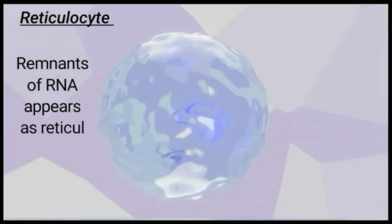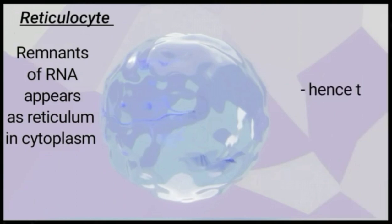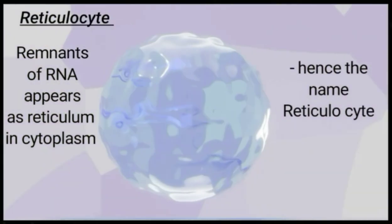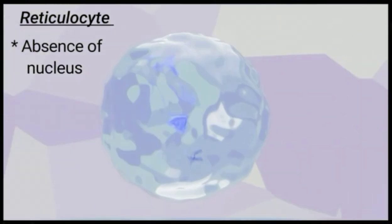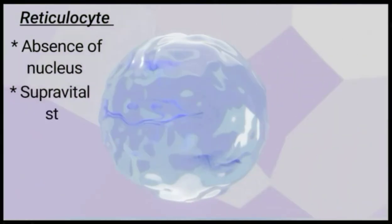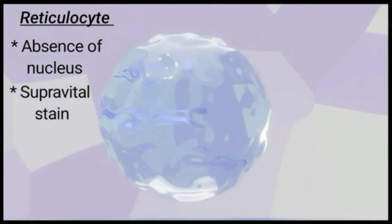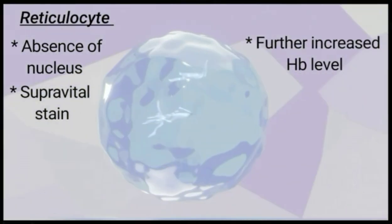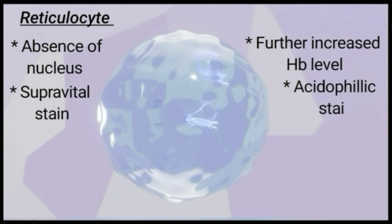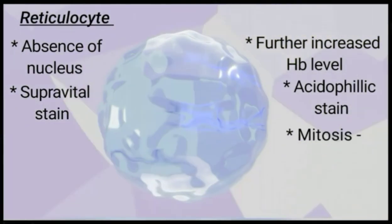Then late normoblast differentiates into reticulocyte. Remnants of RNA appear as a reticulum in the cytoplasm, hence the name reticulocyte. The nucleus is absent, it appears with a supravital stain that is brilliant crystal blue, has a further raised hemoglobin level, stains acidophilic, and does not undergo mitosis.